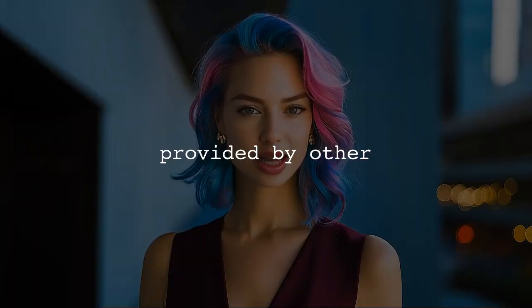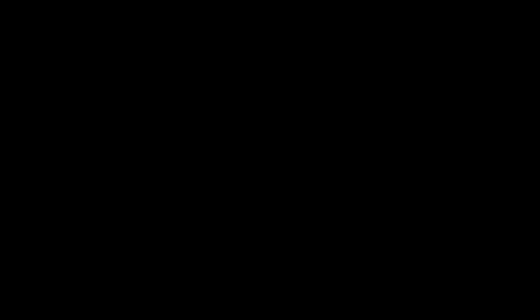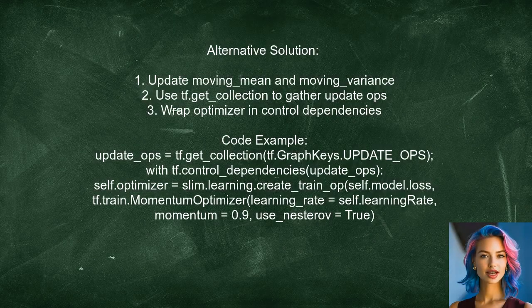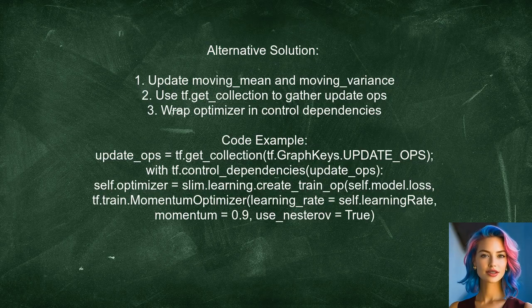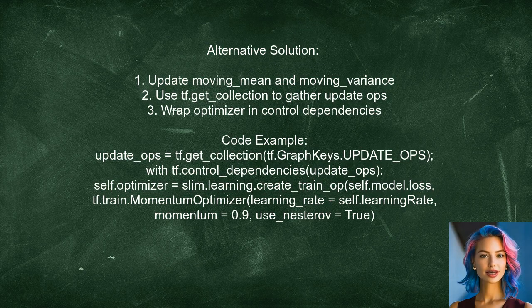Now, let's look at the answers provided by other users. An alternative solution addresses the issue with batch normalization in TensorFlow. They found that the problem arises from the need to update moving mean and moving variance in the tf.layers.batch_normalization layer. To fix this, they suggest modifying the training process to include update operations — using tf.get_collection to gather update ops and wrapping the optimizer creation in a control dependency to ensure these updates occur correctly.